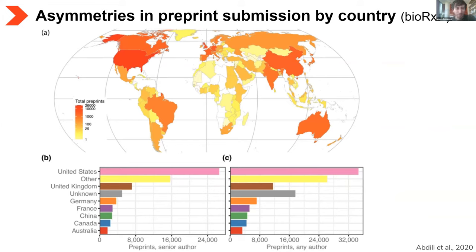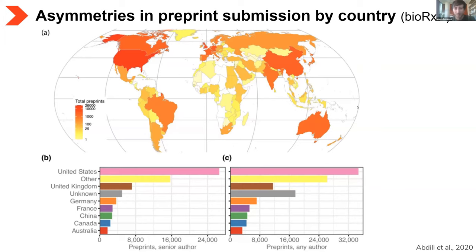Now that we've introduced the fast rise of preprints, I want to show how this rise hasn't always been homogeneous. We see a global heat map of the number of preprints on bioRxiv by country of the corresponding author, and it is far from uniform. The heat bar is on a log scale, so the difference between orange and red is quite large. I fear that a differential adoption of such a revolutionary tool could enlarge a scientific and technological gap that already exists between different geographical areas.